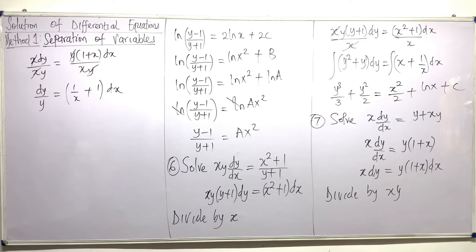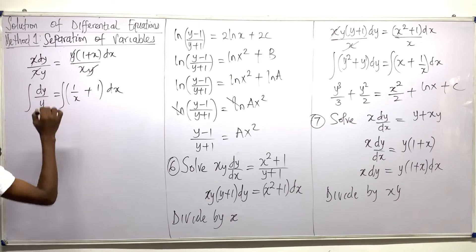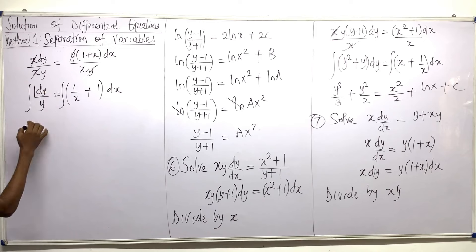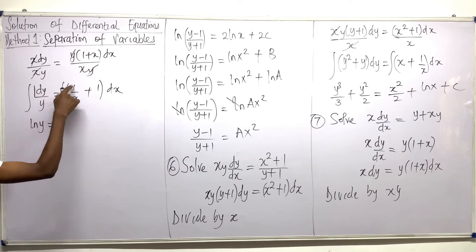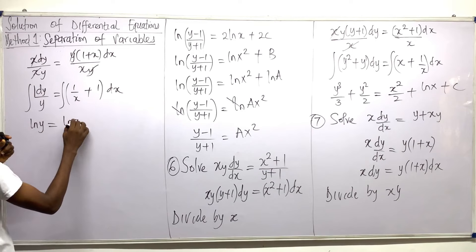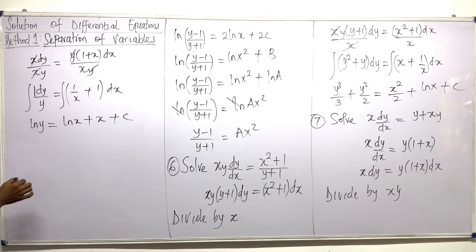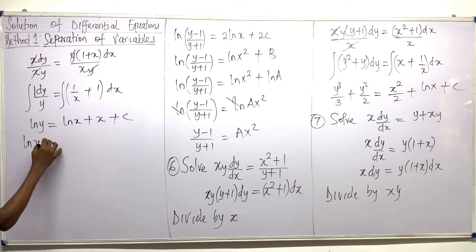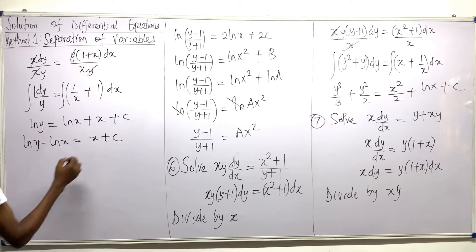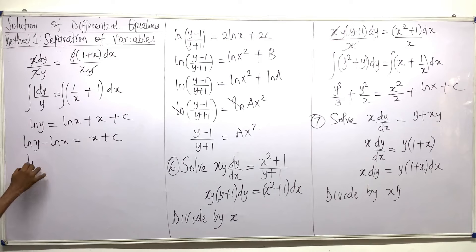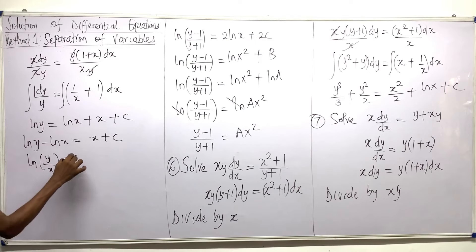The next thing I'm going to do is integrate both sides. Take the integral of this and the integral of this. Remember this is 1, so the integral of 1 over y with respect to y is ln y, equal to the integral of 1 over x with respect to x is ln x. The integral of 1 is just x, and then plus C. Now can I take this ln to this very side? Yes, I can do so. So this is ln y take away ln x equal x plus C. Now remember that when you're subtracting logarithms, you need to divide the functions. So this is ln of y divided by x equal to x plus C.